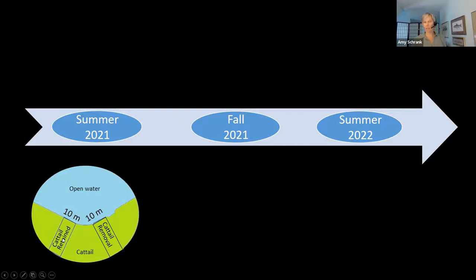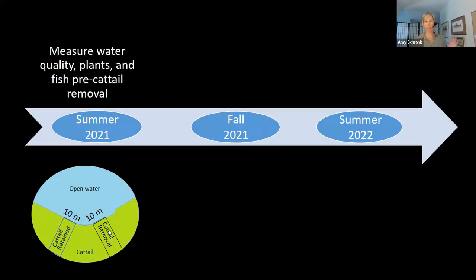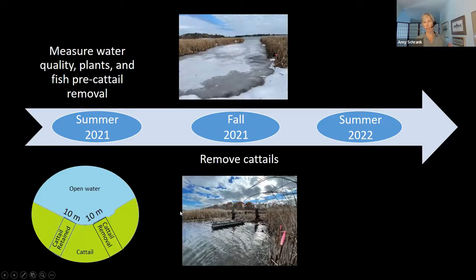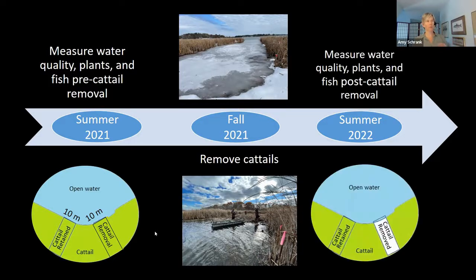This past summer we measured a suite of variables — water quality, plants, and fish — before cattail removal, so the two sites were basically the same in 2021. This past November and December we removed cattails at one of the two sites in all our lakes. We will go back in summer 2022 to measure water quality, plants, and fish post-removal. So we won't really find out the answers until next summer, but we do have some preliminary results.